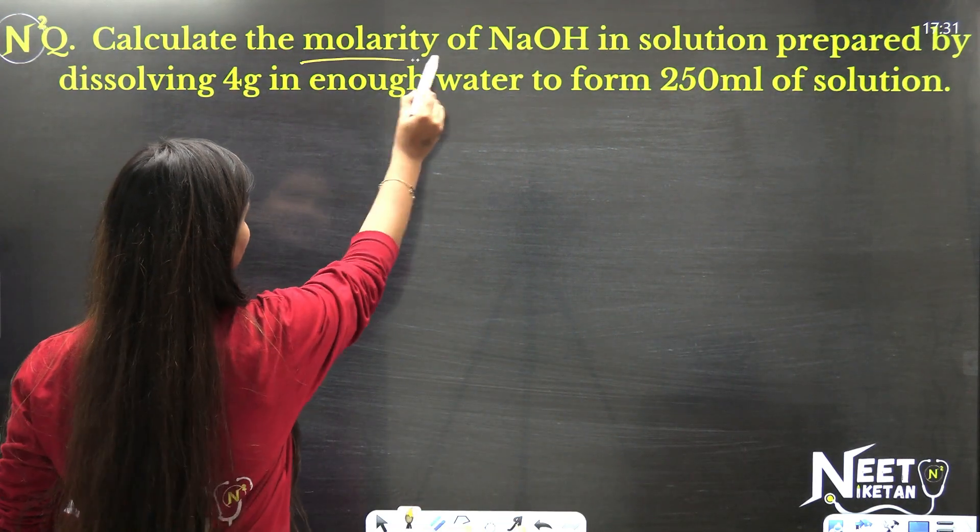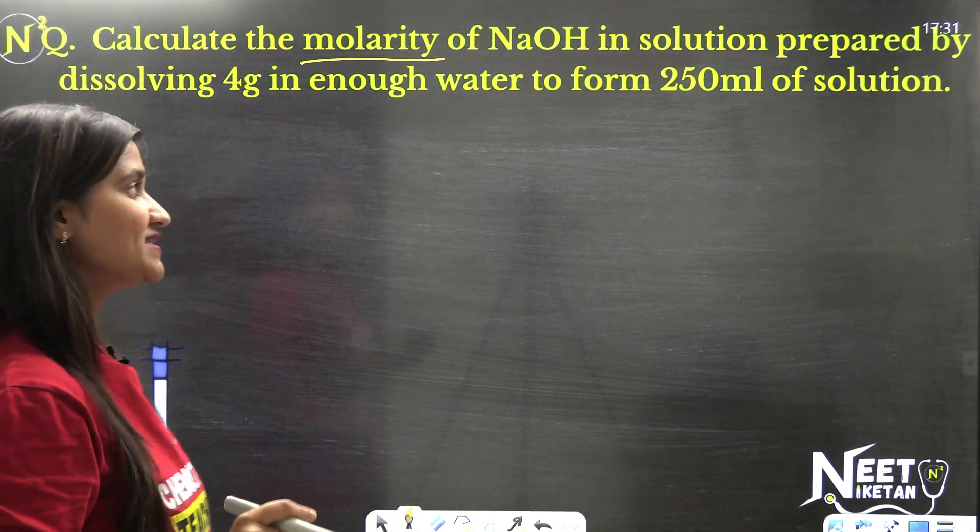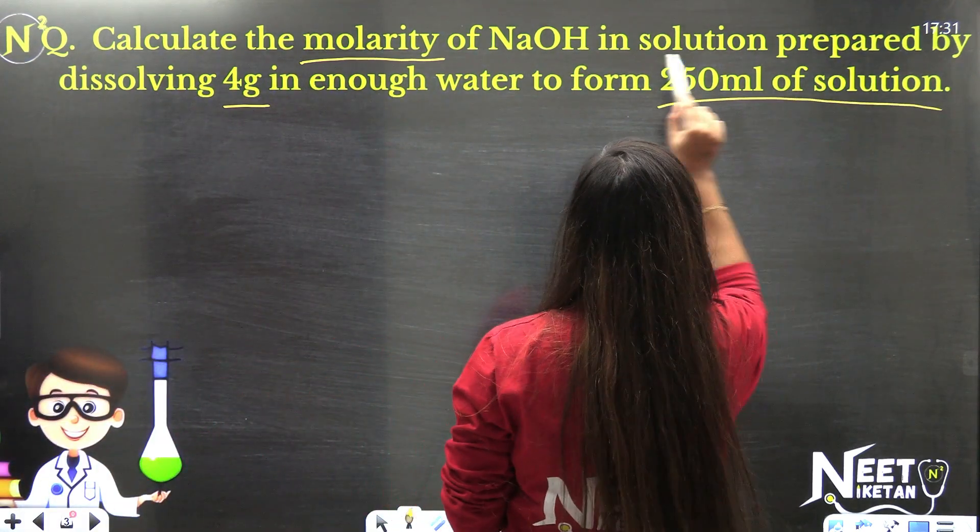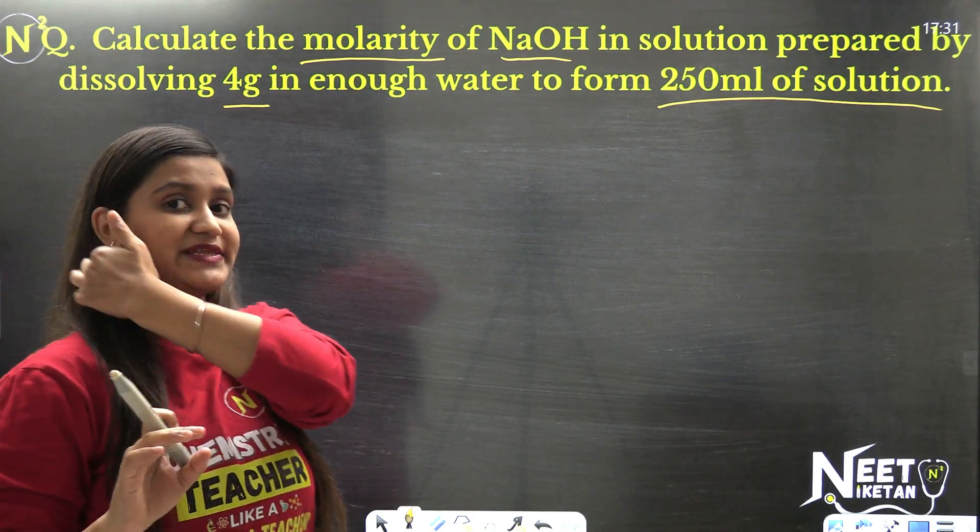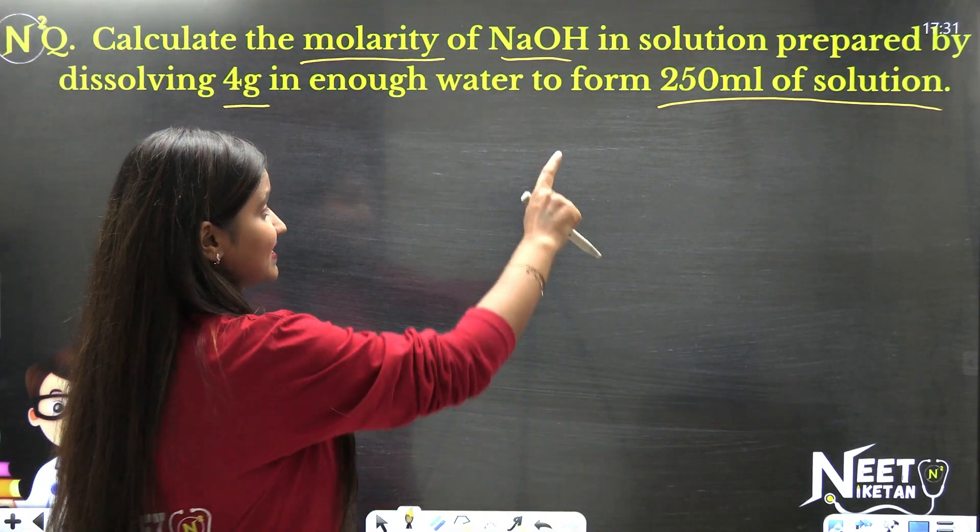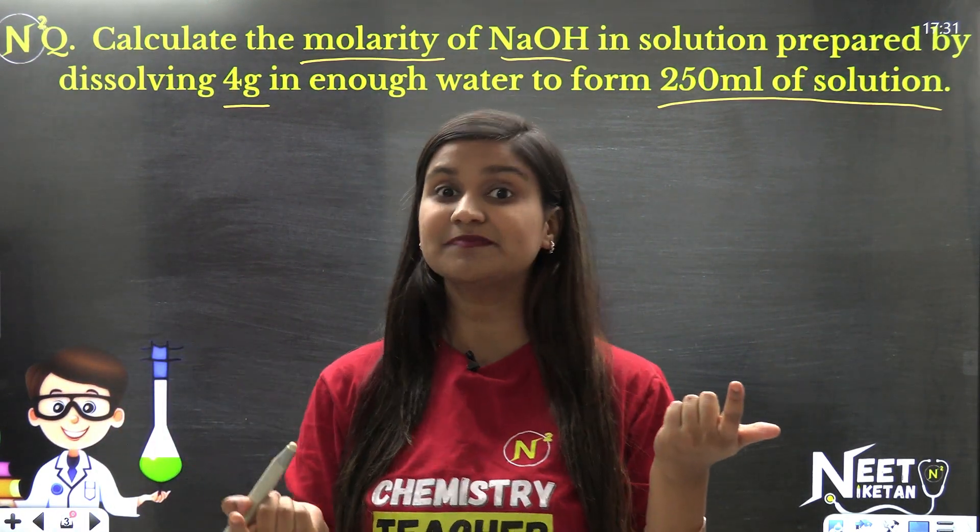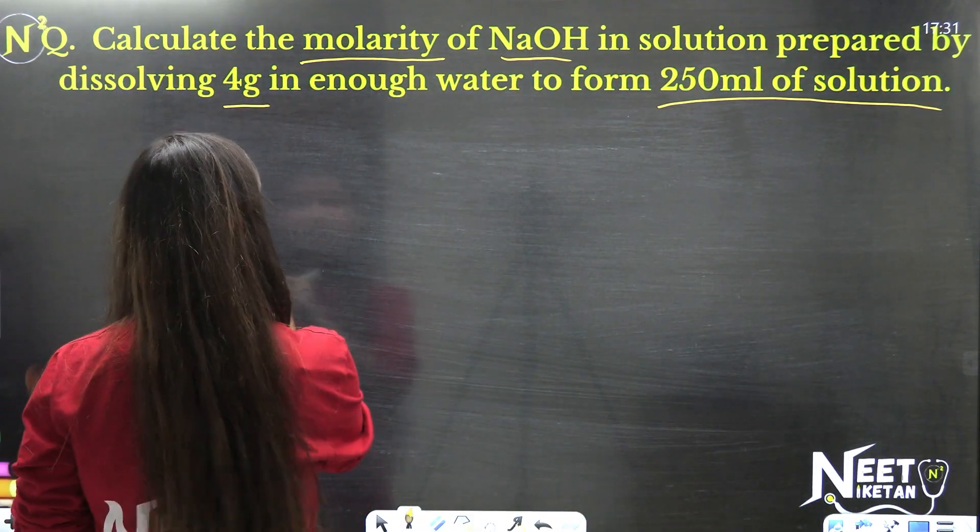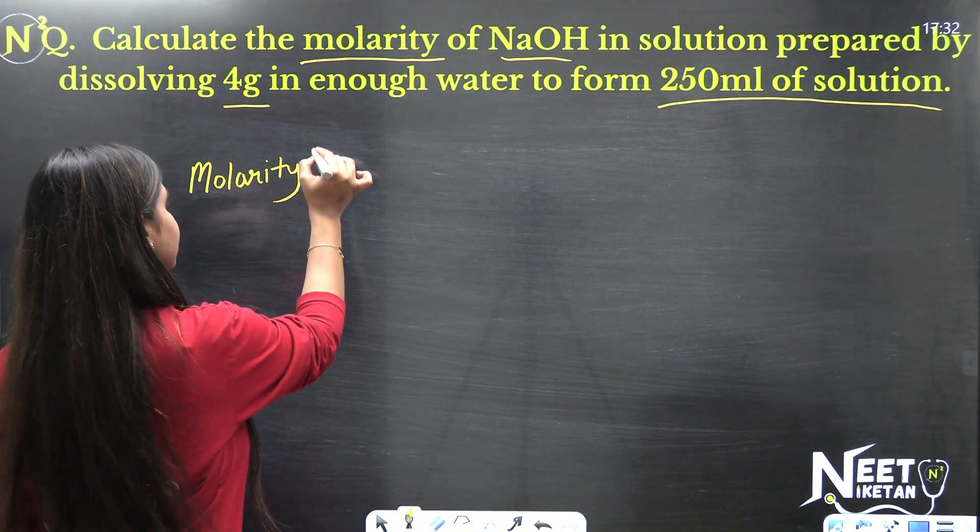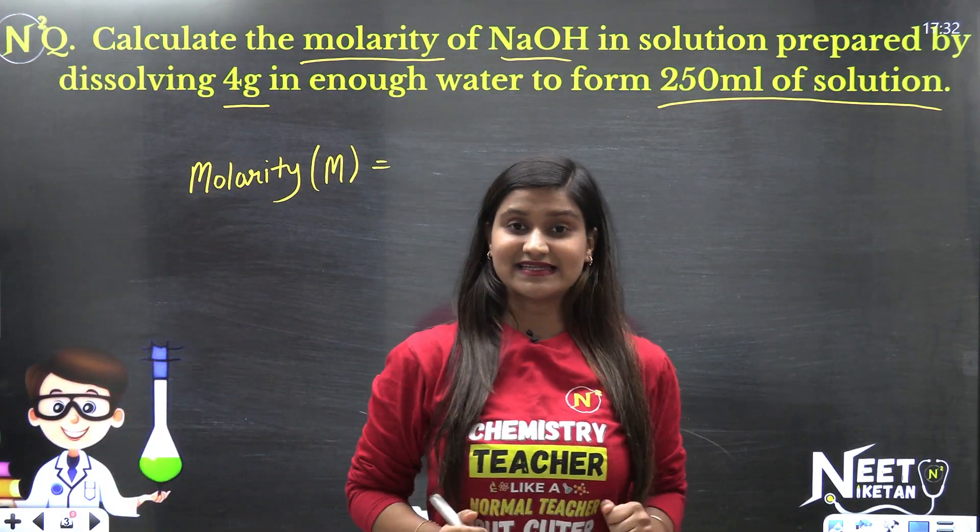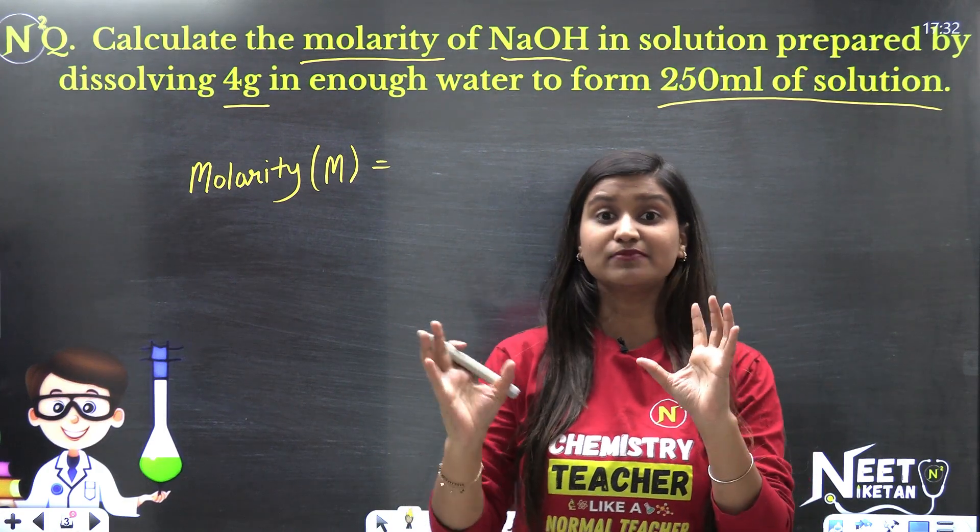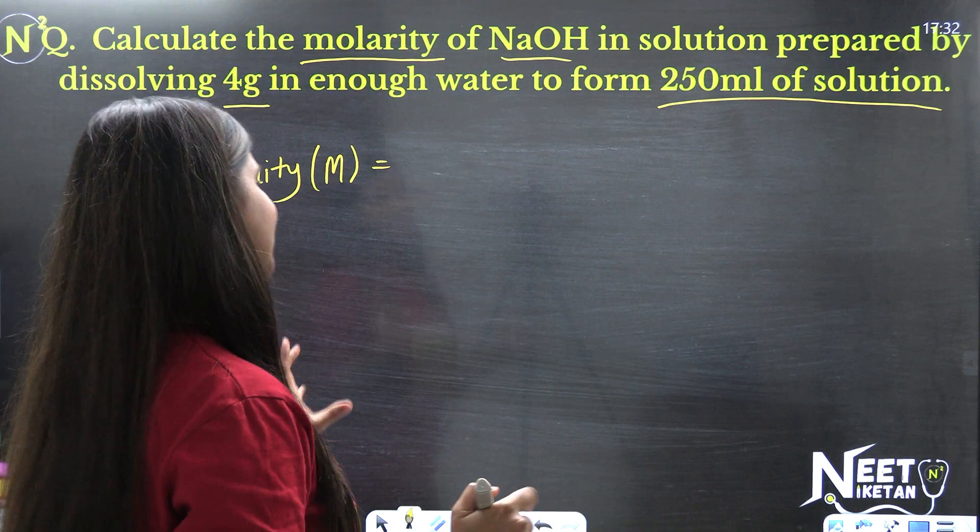Calculate the molarity of NaOH in solution prepared by dissolving 4 grams in enough water to form 250 ml of solution. You took 4 grams NaOH, dissolved it in water, and the total volume of solution came out to be 250 ml. We have to find the molarity. First let's recall molarity - we represent it with capital M.